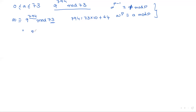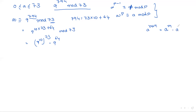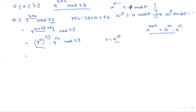Using the formula a^(m+n) = a^m · a^n, we write 9^(730+64) = 9^(10×73) · 9^64. Consider a = 9^10, so we have a^73 mod 73. By Fermat's theorem, a^p mod p = a, so this gives 9^10 · 9^64 mod 73, which equals 9^74 mod 73.